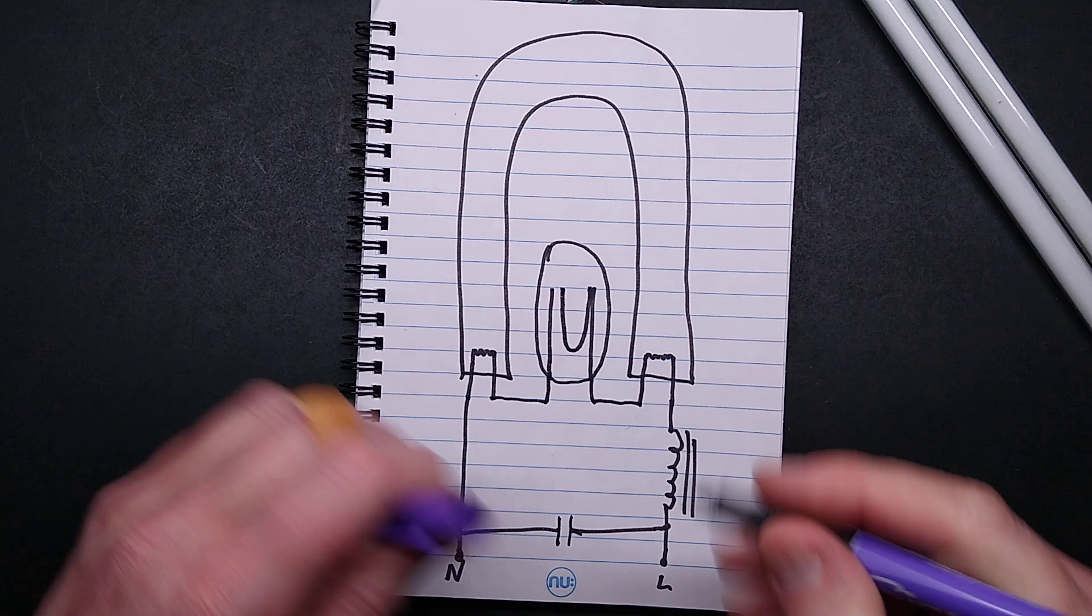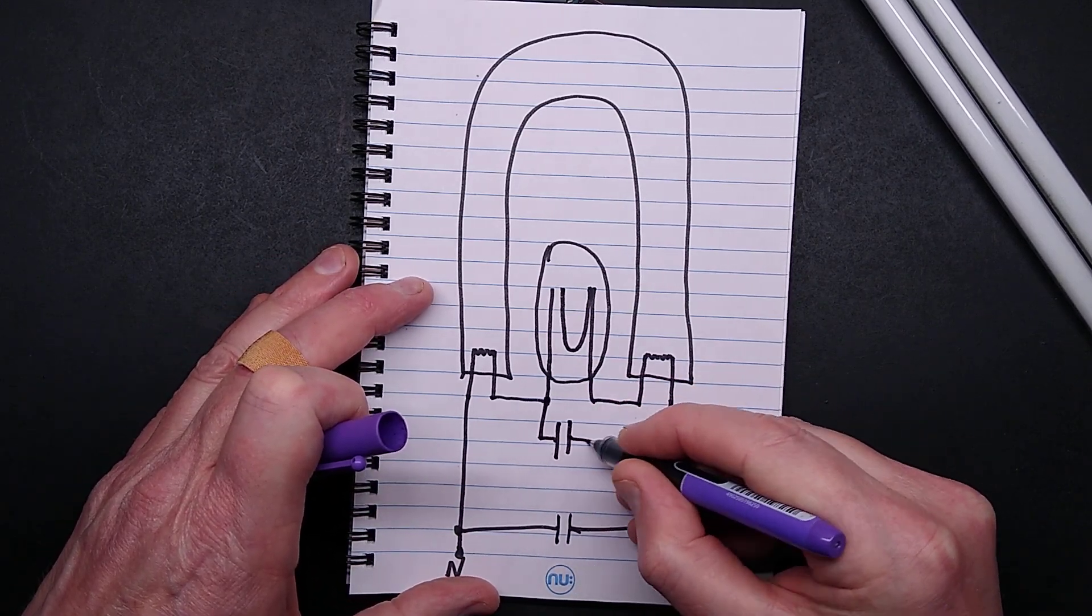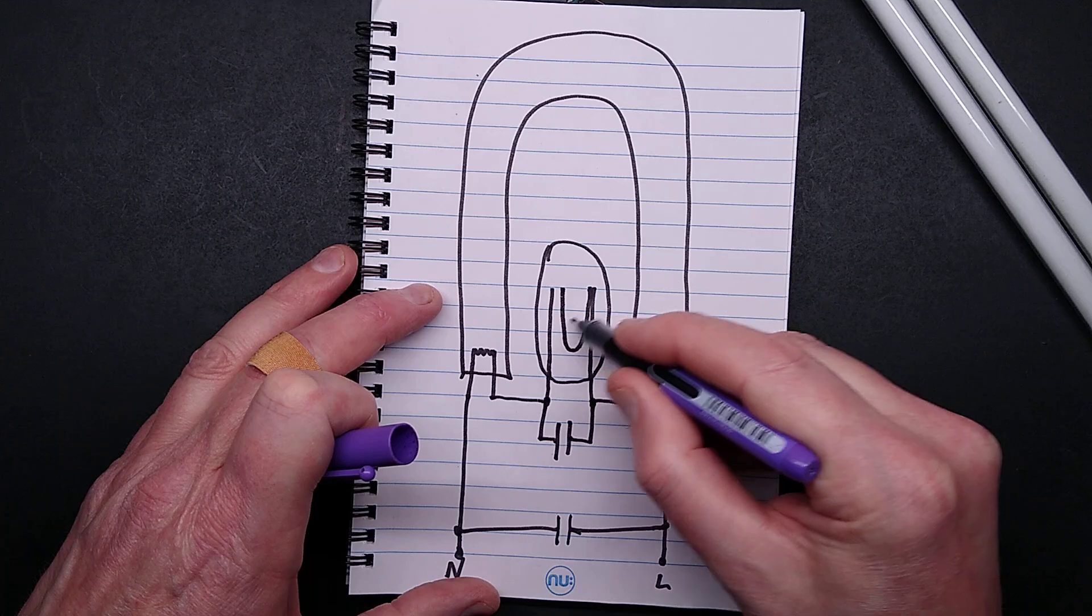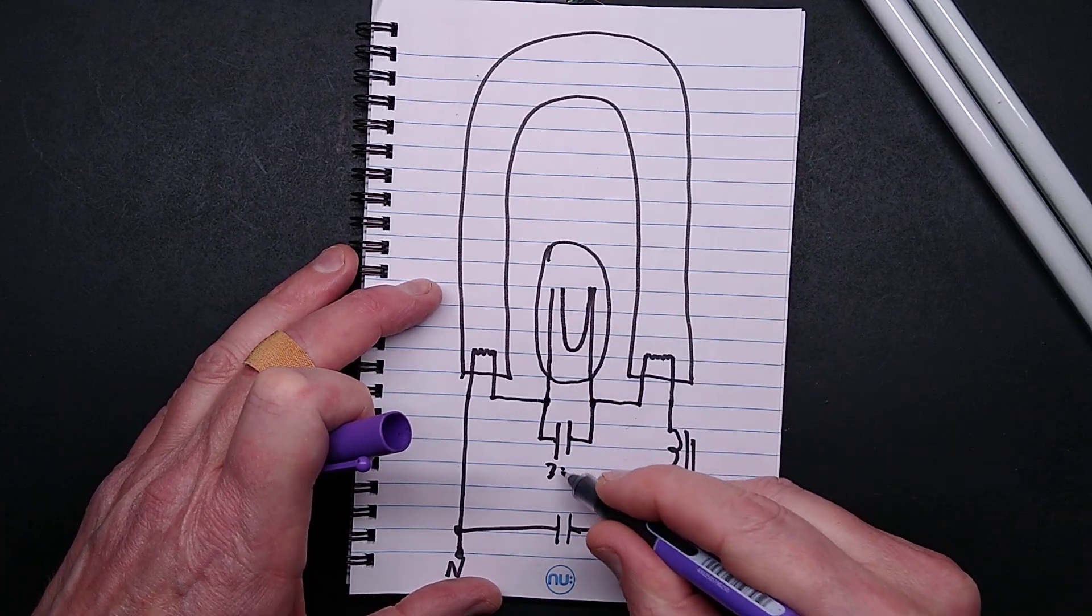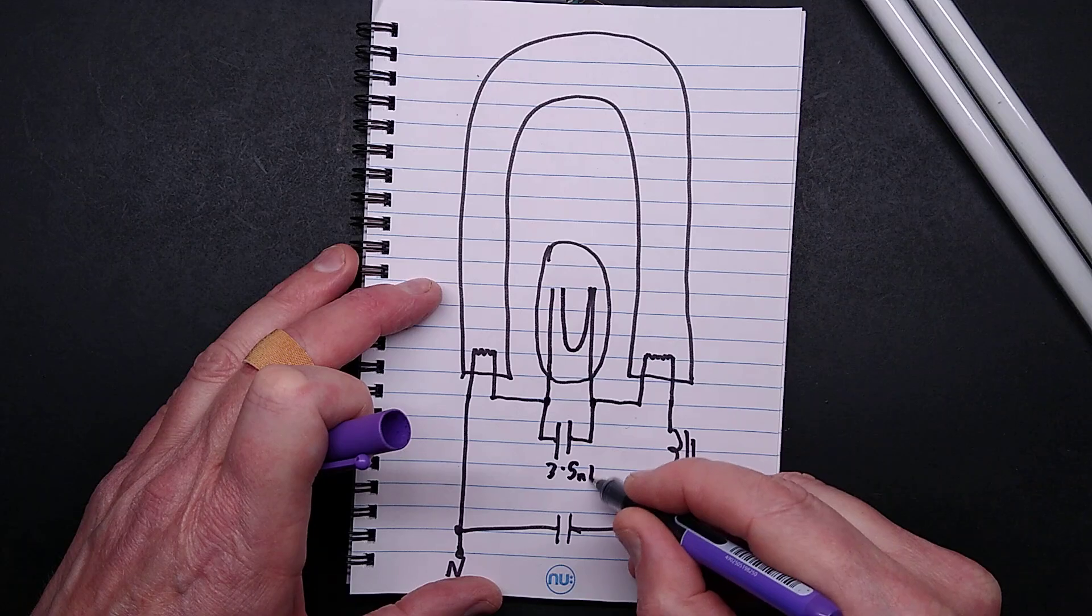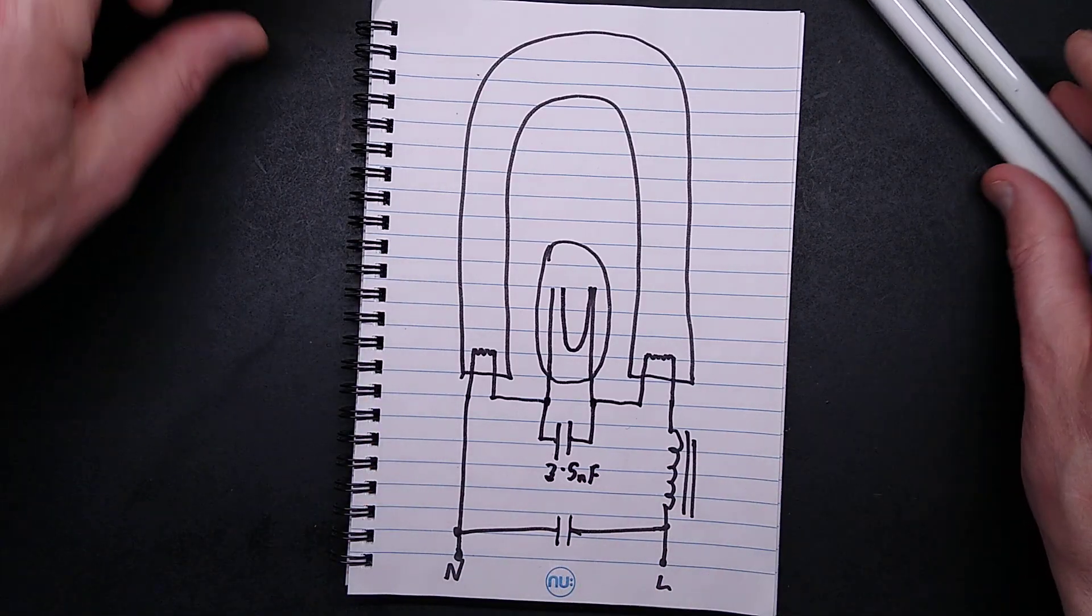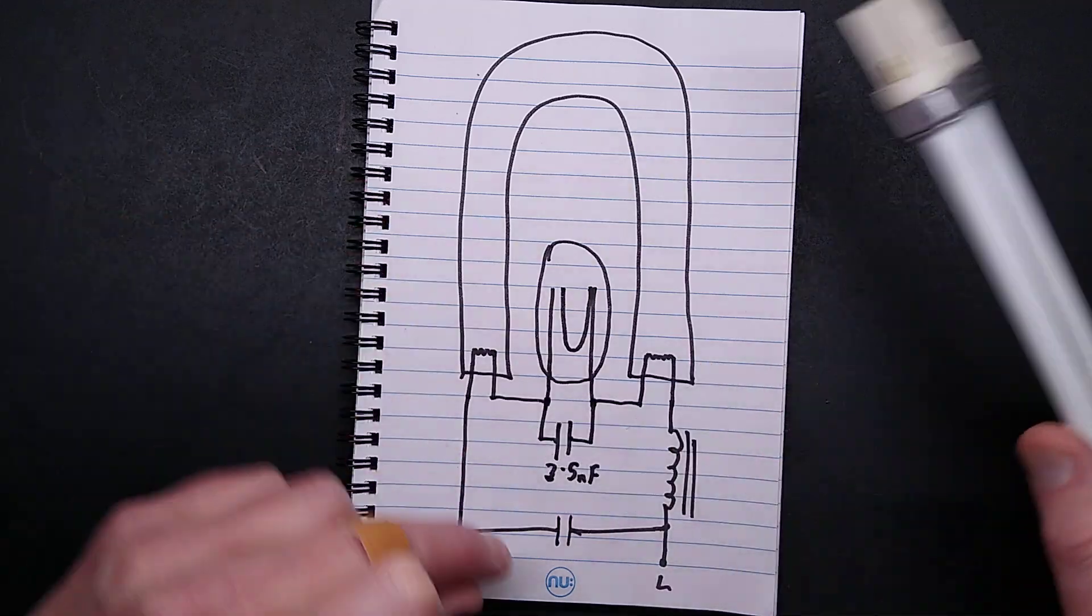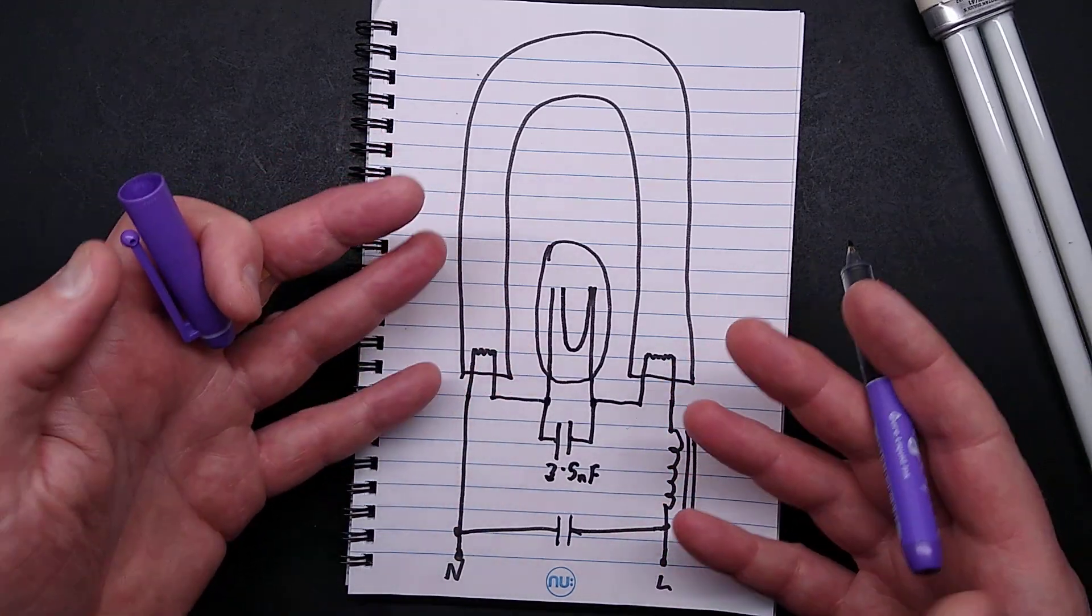It is measured 3.5 nanofarad. It's purely for suppression because it's across the contacts in there, but will contribute to blackening those contacts. This one down here would depend on the rating of the fluorescent tube - I'm not really sure what it would be. It would just be in sort of low microfarads, like one or two microfarads probably.